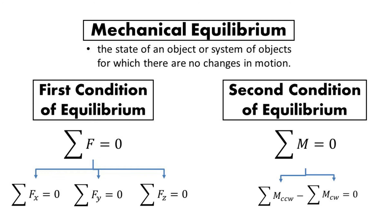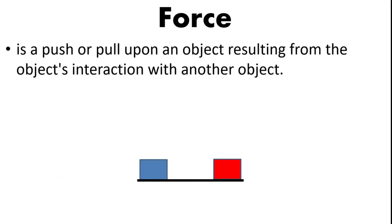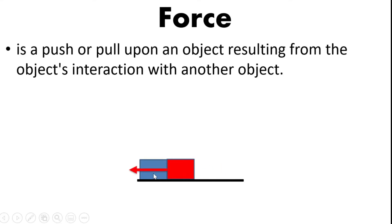Since the first condition of equilibrium is about forces, let's define what a force is. A force is defined as a push or a pull upon an object resulting from the object's interaction with another object. Force can only be present if there are two objects — one object acts the force and the other experiences it. In our diagram, the red box exerts a force on the blue box, and the blue box experiences that force.